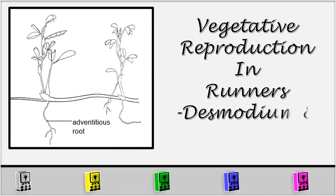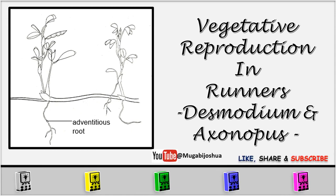Hello, my name is Joshua Mugabe. I welcome you to vegetative reproduction in runners, Desmodium, and Axonopus.